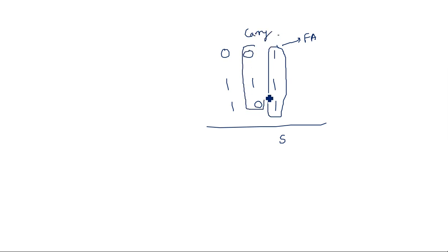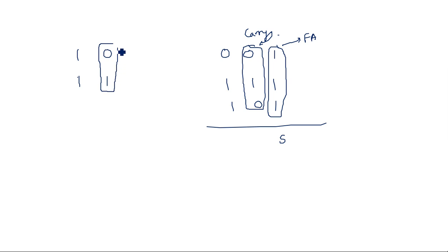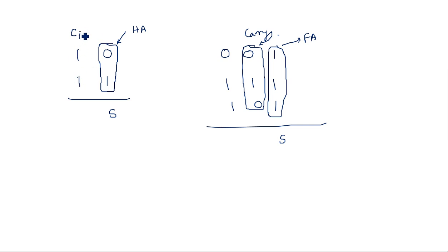That carry output becomes the carry input (Cin) for the next stage. For example, adding 1011 and 1101: at the first stage you add the two LSBs. When adding the next pair of bits, the carry from the previous stage joins in — making three bits total. That is why we need a full adder for subsequent stages, since it can handle three bits: A, B, and the carry in from the previous stage.